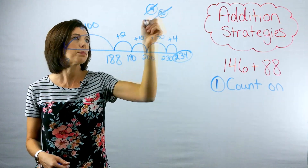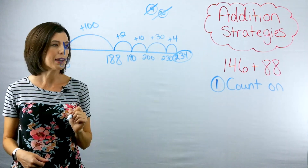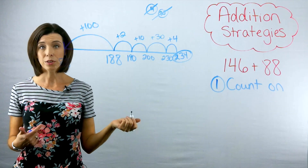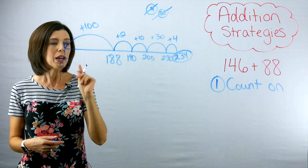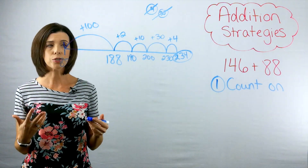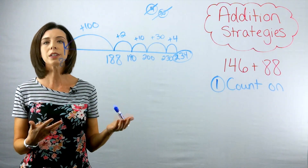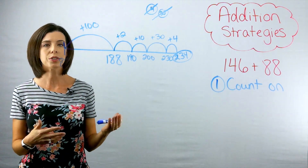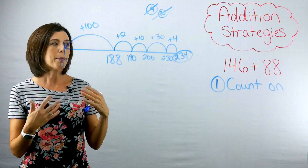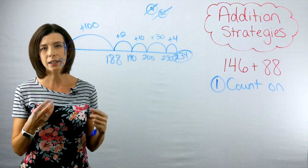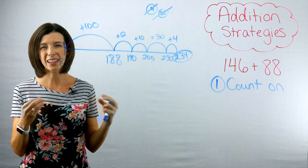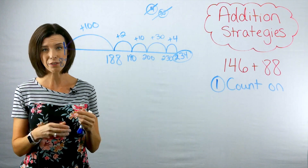I've used all of those hops, so my answer is 234. The beauty of this strategy is that it really allows students to operate where they are thinking mathematically and allows them to think differently.